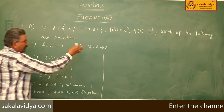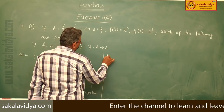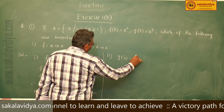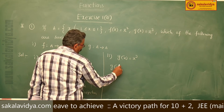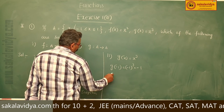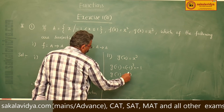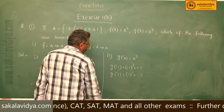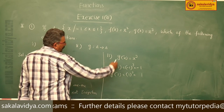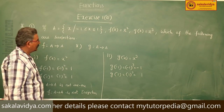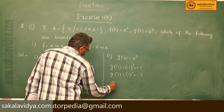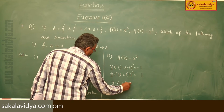For the second case, g(x) = x³. Consider g(-1) = (-1)³ = -1 and g(1) = 1³ = 1. So -1 maps to -1 and 1 maps to 1 — different elements have different images. Therefore, g: A → A is a surjection.